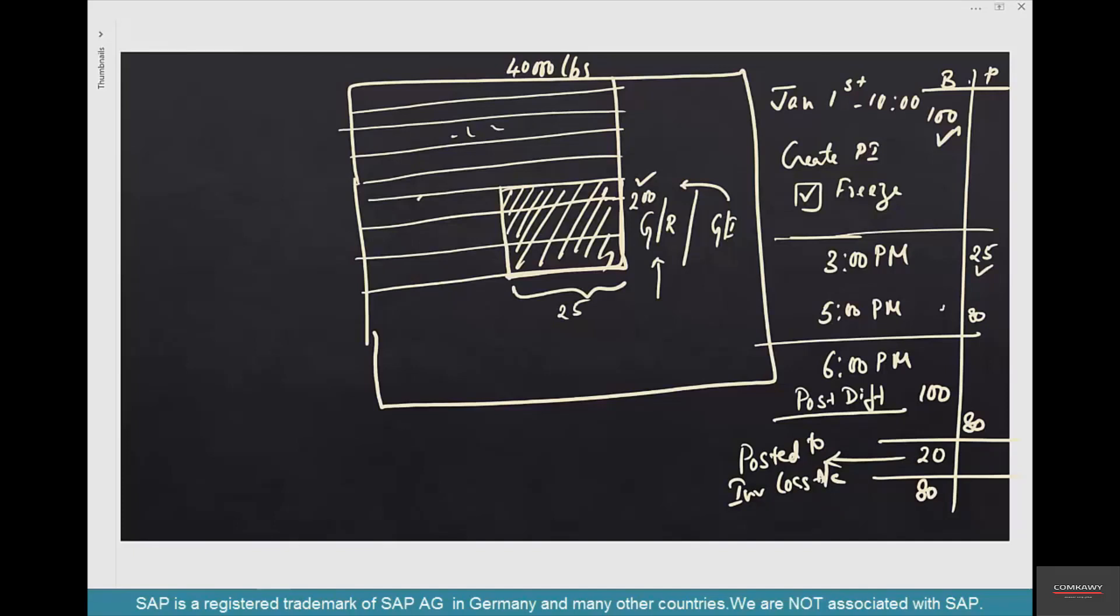Now what happens to this inventory, 25 pounds that has come in during your accounting process? Because you have frozen the book inventory until 6 PM, anytime you check the inventory in MMBE, it's still going to be 100 pounds. But once you post the difference, this 25 will be added to 80 and the total inventory will now become 80 plus 25, that is 105.